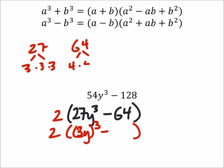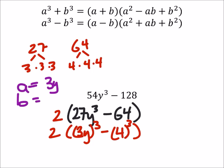And it is 4 times 4 times 4. So that's 4 cubed. And we identify that the a inside the parentheses is 3y and the b is 4.